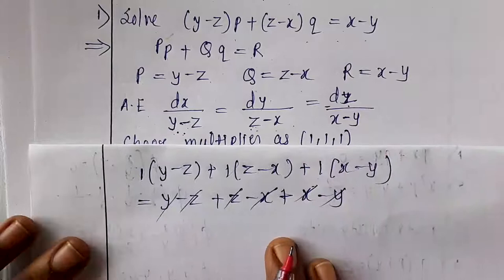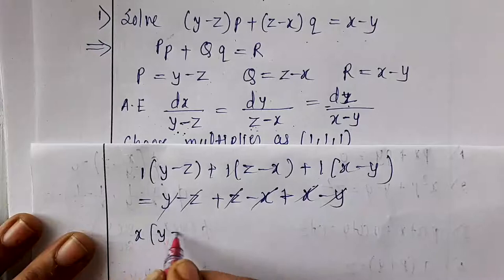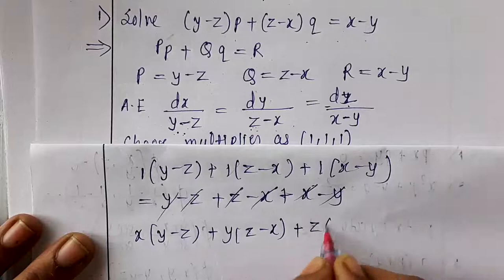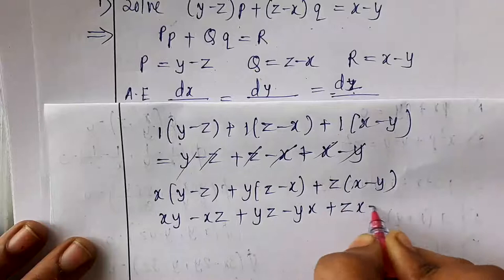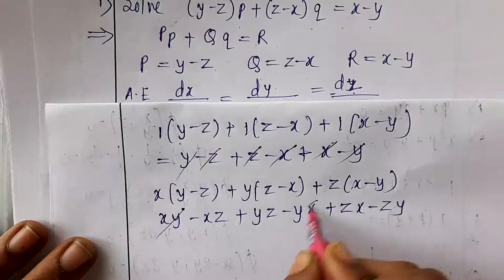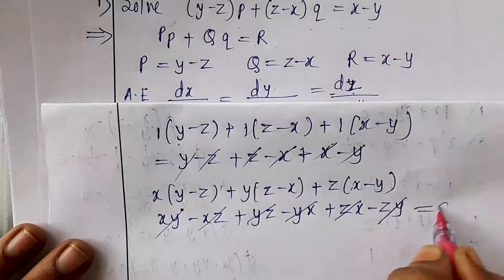So the first solution is u: x + y + z = c₁. To find another solution, we need a second set of multipliers. We check x(y − z) + y(z − x) + z(x − y): expanding gives xy − xz + yz − yx + zx − zy, and all terms cancel, so this equals zero. Therefore x, y, z can be chosen as multipliers.